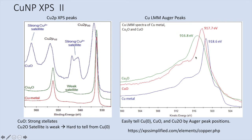Another thing you can see more clearly with our data is that for metal, the spectrum becomes more sharp, whereas the oxide ones are dull or broader. Let's go look at the real data we collected.